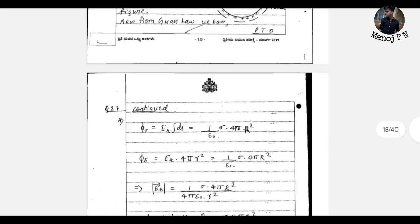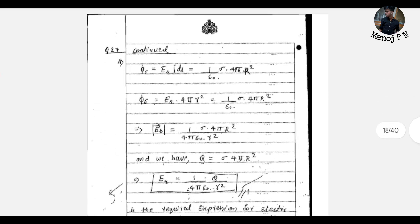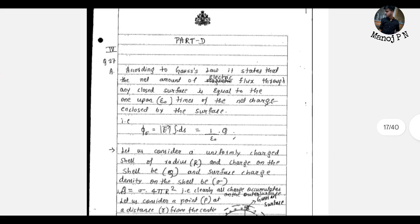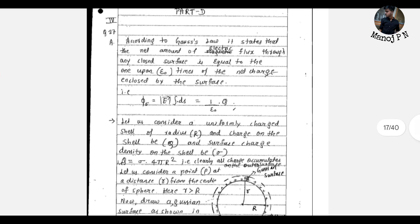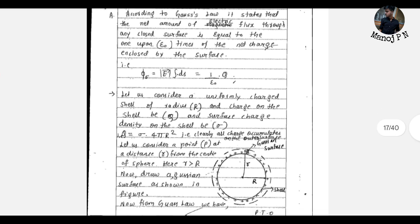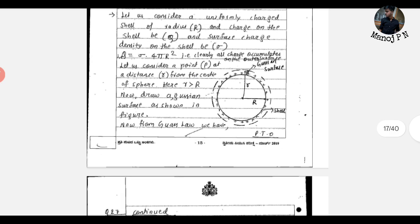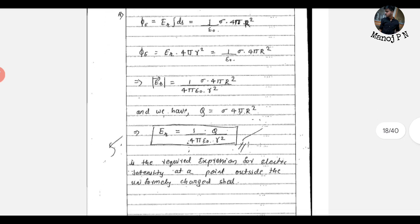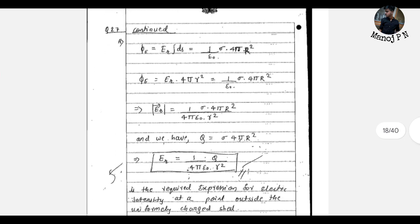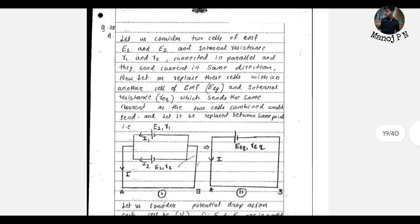And here comes Part D — the king. So in Part D, the explanation is proper. If you have a derivation and a diagram, make sure the diagram is proper. If you have a derivation, explain all the parts and problems.